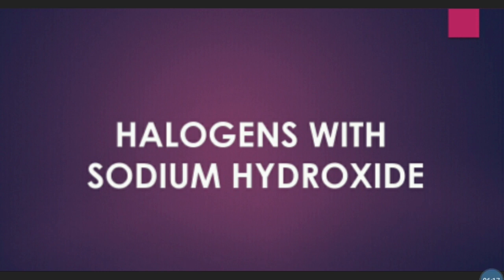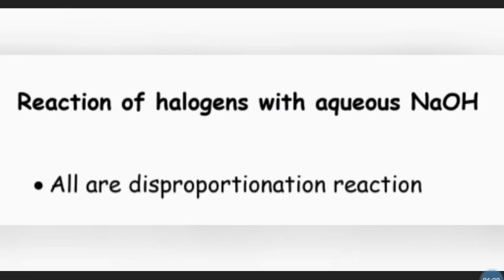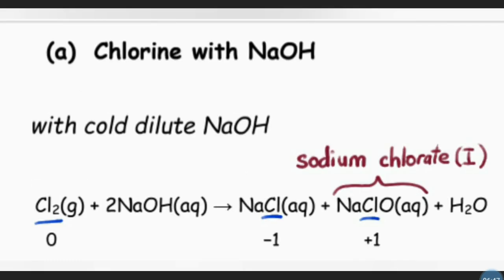In the next part of the lesson, we will look at the reactions with sodium hydroxide solution — just for chlorine, bromine, and iodine. The reactions of halogens with aqueous sodium hydroxide are all disproportionation reactions. A disproportionation reaction is a redox reaction in which an element is simultaneously oxidized and reduced to form at least two different products. The reaction between chlorine and cold dilute sodium hydroxide solution produces sodium chloride, sodium hypochlorite (NaClO), and water.